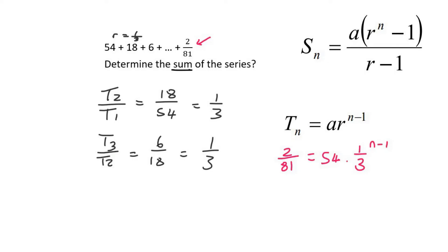Okay, so how do we solve this now? Well, what you do is you need to take this 54 over to that side by dividing. So it's going to be 2 over 81 divided by 54, which is 1 over 2187, equals to a third to the n minus 1.